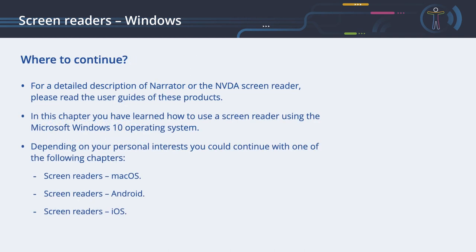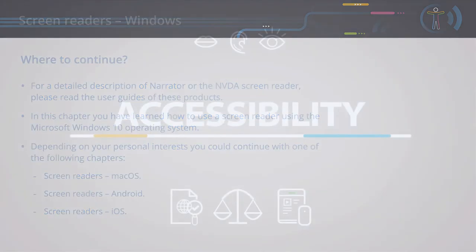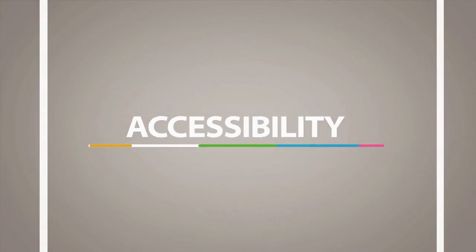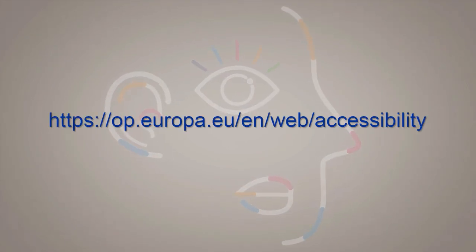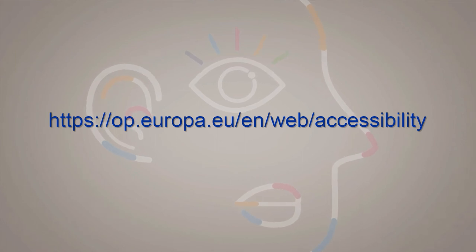Where to continue. For a detailed description of Narrator or the NVDA screen reader, please read the user guides of these products - you can find the links to these guides below the video. In this chapter, you have learned how to use a screen reader using the Microsoft Windows 10 operating system. Depending on your personal interests, you could continue with one of the following chapters: Screen readers Mac OS, Screen readers Android, Screen readers iOS, or Accessibility. For more information, visit op.europa.eu/en/web/accessibility.